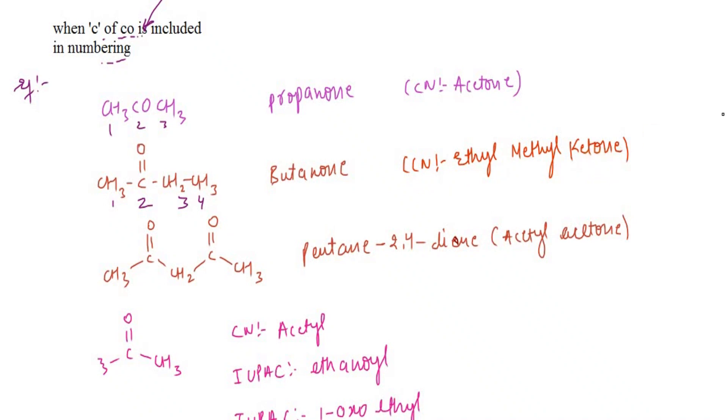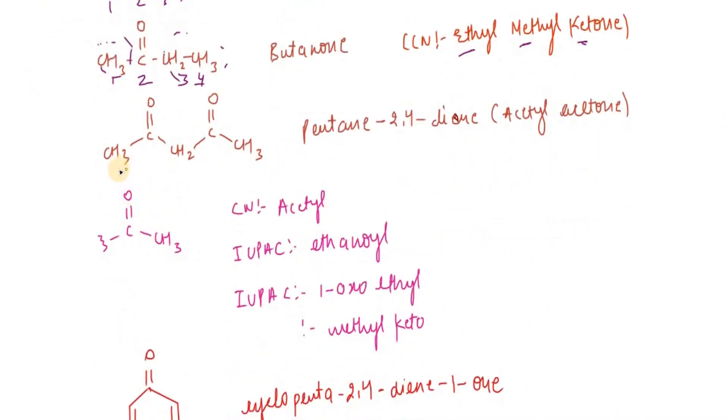How do we use the common name? This is methyl and this is ethyl, so we use alphabetical order: ethyl methyl ketone. For longer chains, numbering is important and mandatory to specify the name because the position could vary, especially in the case of diones.